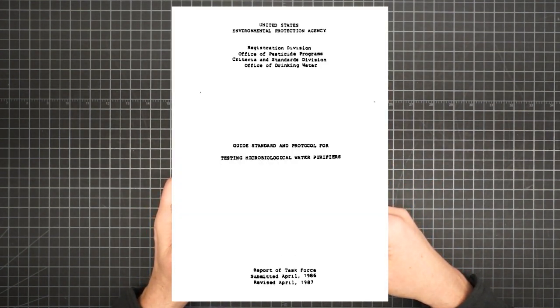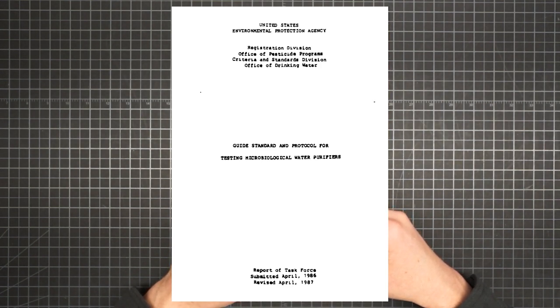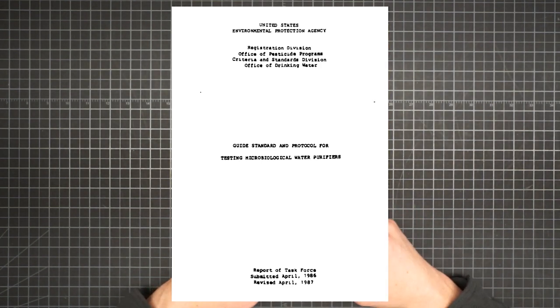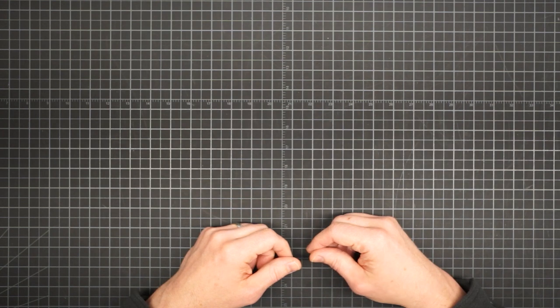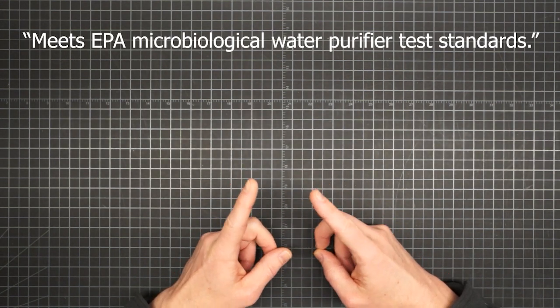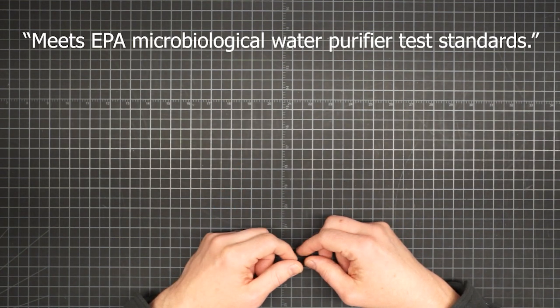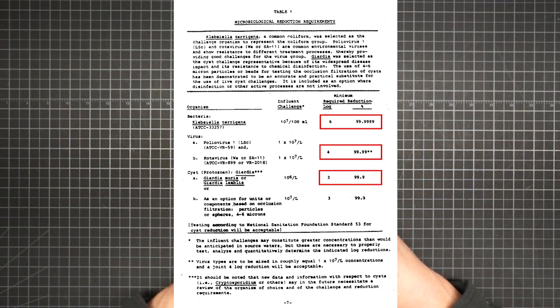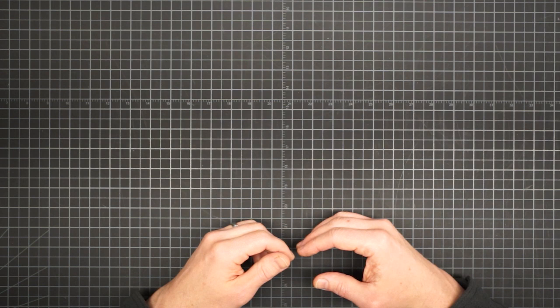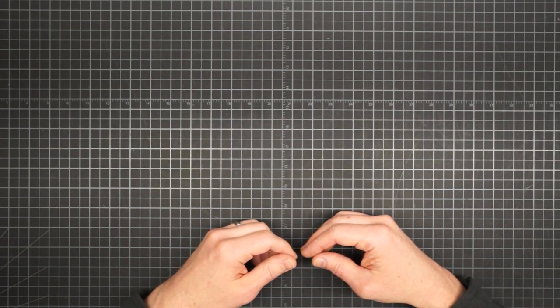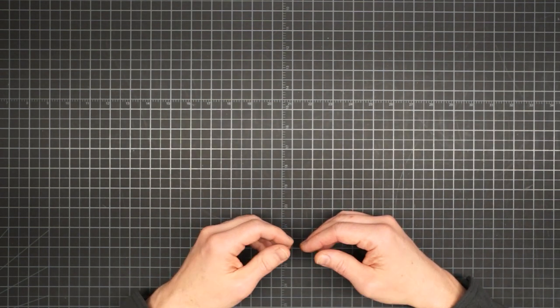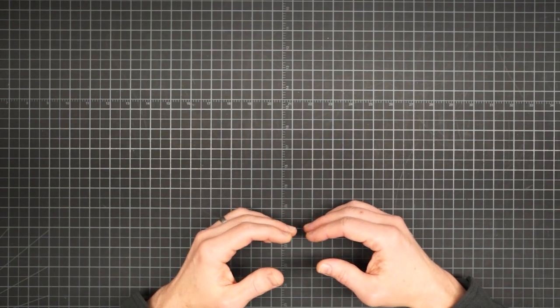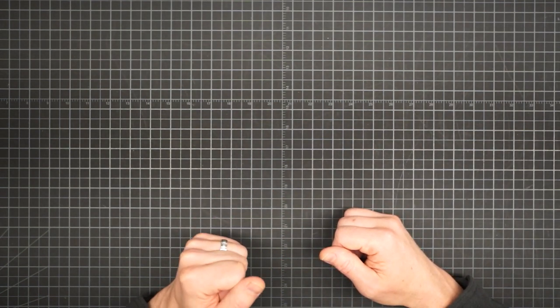Drinking water disinfection is handled by the Environmental Protection Agency, and they also set log reduction standards. In order to put this sentence on the package of your product, it must accomplish at least six log reduction of bacteria, four log reduction of viruses, three log reduction of cysts. Those were the three major classes of pathogens discussed in part one, and each disinfection method has its own strengths and weaknesses regarding each of these microbial culprits.